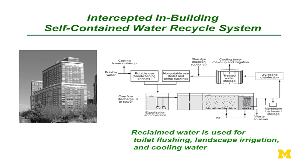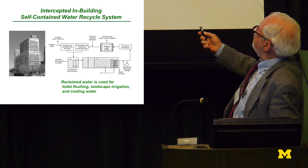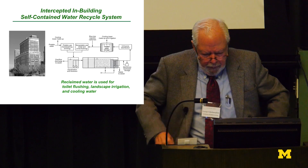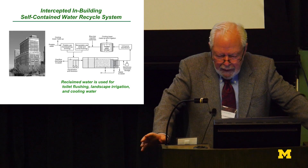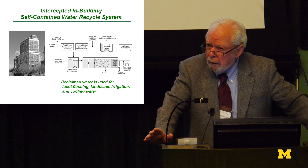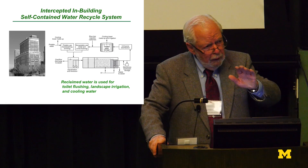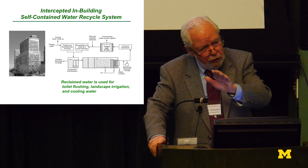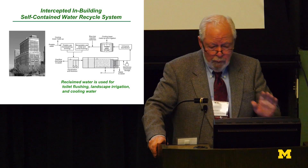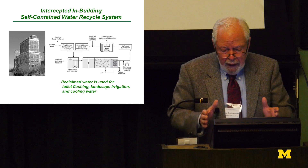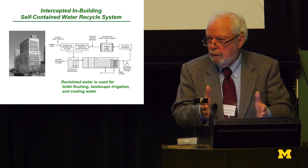The Solaire building in New York City — and now there are many more — traps all the water, brings it into a membrane bioreactor, and uses ozone and UV. With a membrane bioreactor, the effluent has a slight yellow color characteristic of indole, a component of urine — and ozone is used to decolor the treated effluent. This building has very expensive apartments and is in full operation, and you're certainly going to see more of this.